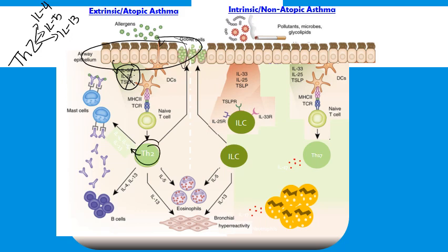The Th2 cell produces its own IL-4, IL-5, and IL-13, which help activate and maintain mast cells. IL-4 and IL-13 from the Th2 cell also instruct B cells to make IgE, which then binds on the mast cells via FC epsilon receptors. The next time the allergen comes in, it cross-links these IgEs on the mast cell, and the mast cell degranulates, releasing a whole array of mediators.